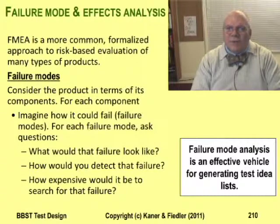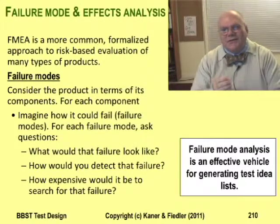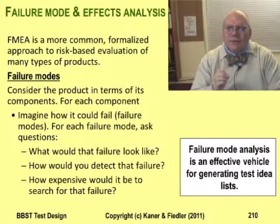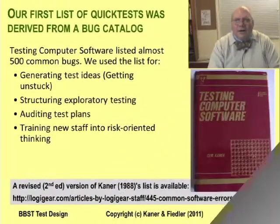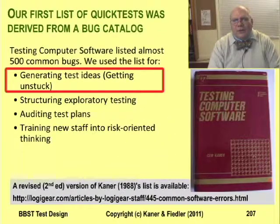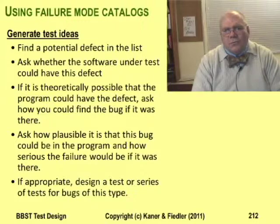Just as Bach's use of guide words is inspired by HAZOPs but not exactly the same, these failure mode catalogs are inspired by failure modes and effects analysis but the process isn't quite the same. In traditional FMEA, once you have a list of failure modes, you analyze their potential impacts — the effects of each potential failure — in order to prioritize testing. But in failure mode catalogs, much less work is done on effects. Prioritization happens outside the list, not as a core part of the analysis. The original bug catalog was created for four types of tasks, and prioritization wasn't one of them.